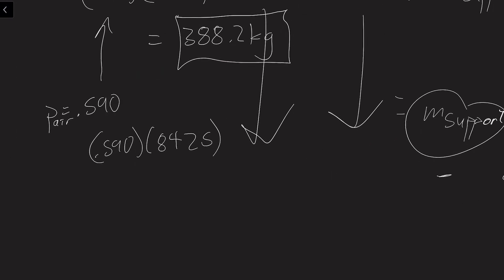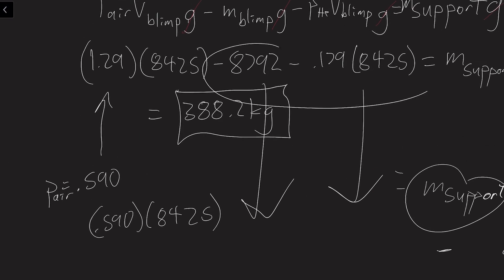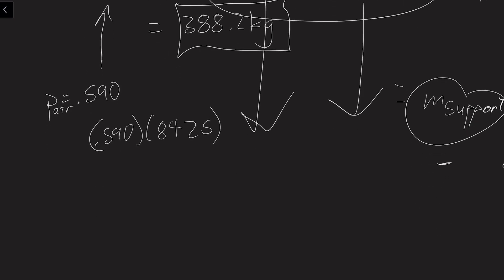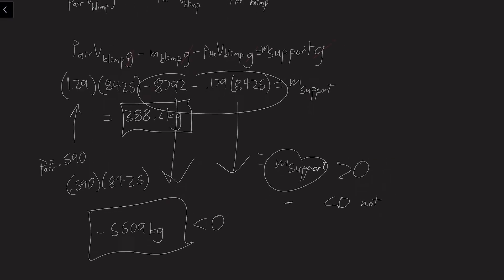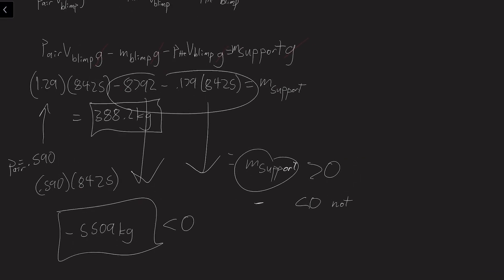So if you plug this in, and you keep the same numbers up here, you're going to get negative 5,509 kilograms, which is less than 0. So it would not be able to float at that altitude. So that means that it would need to use the propellers to generate lift, to stay up in the air, or even rise to the altitude. Okay, now let's get back to the video.